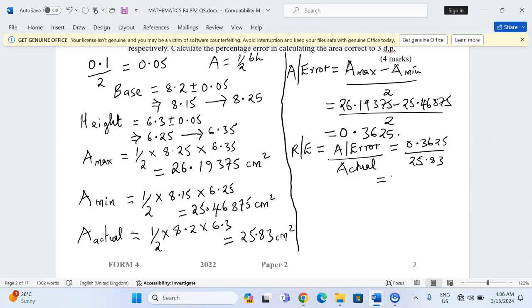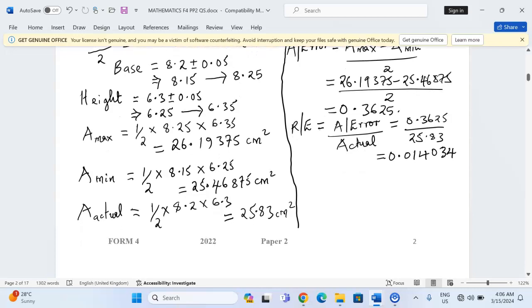This is going to give us exactly 0.014034. That is what you call the relative error.